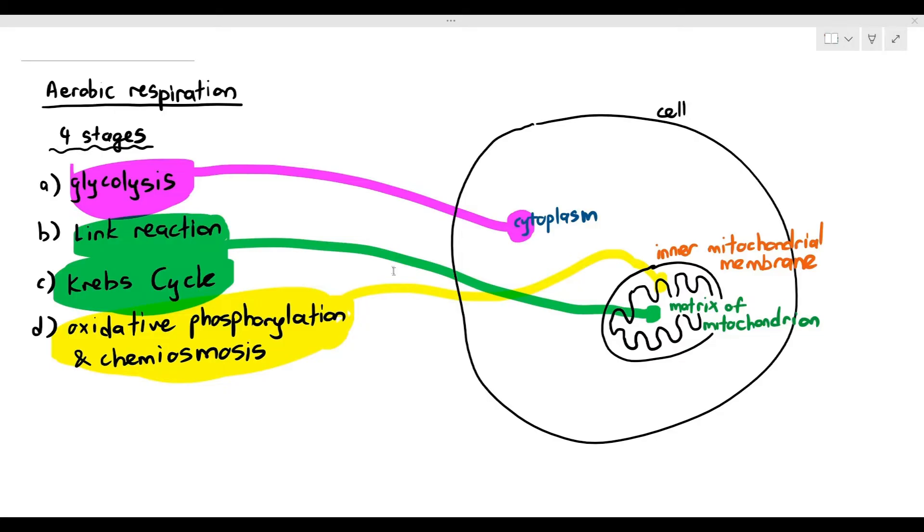Without wasting any time, we have to look at the first step to start the ball rolling, and that step is known as glycolysis. What exactly is glycolysis all about? Glyco basically means sugar-related. Lysis, in this case, means breakdown. It's the breakdown of sugar molecules, and it happens in the cytoplasm. That is the first important thing you have to know about glycolysis.